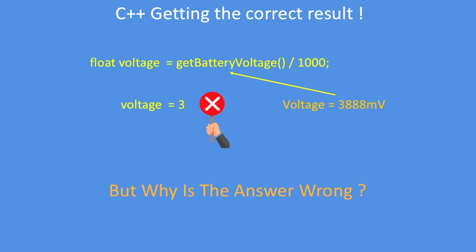When you're programming, it's very easy to make mistakes without realizing what's gone wrong. Here's an example that looks fairly simple: I added a line in a program called float voltage equals getBatteryVoltage divided by 1000. Divided by 1000 because the getBatteryVoltage function returns the answer in millivolts, so 3888 millivolts, but the answer is three and that's wrong.